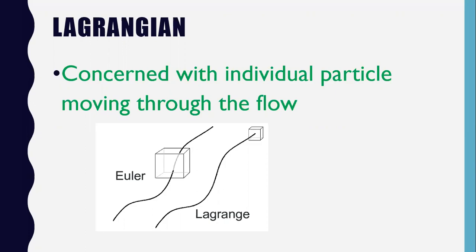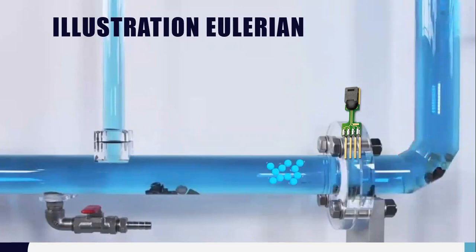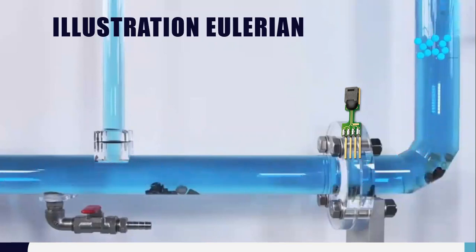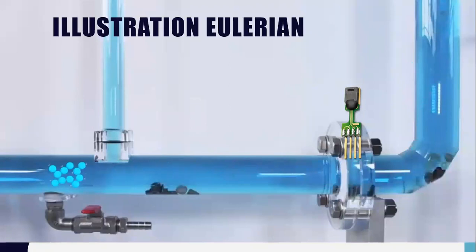Let's see an illustration. Consider a fluid flow through this pipe. I want to analyze the flow in terms of temperature. As we discussed, we have two methods to analyze. Let's take the first one — the Eulerian viewpoint.